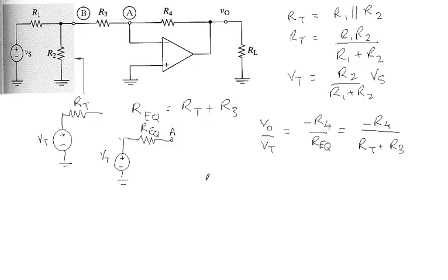With this, we can now proceed to find the relationship between the output voltage V0 and the input voltage Vs. V0 over Vs will be equals to V0 over VT times VT over Vs.